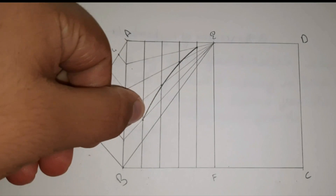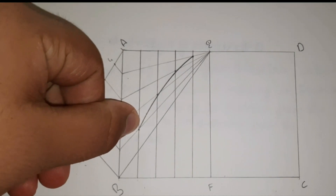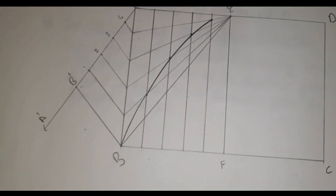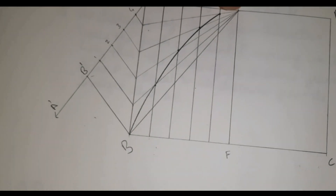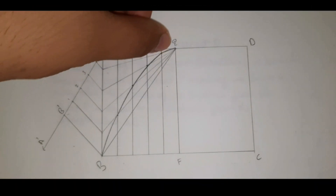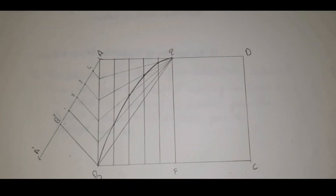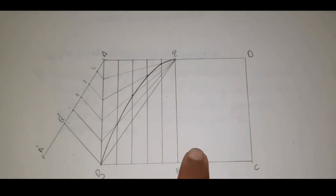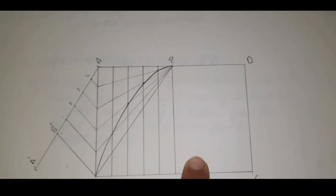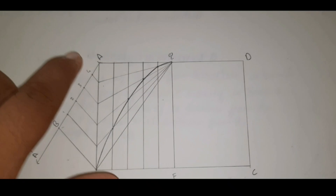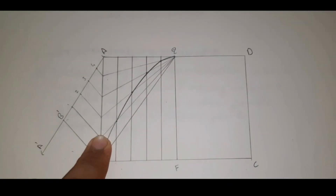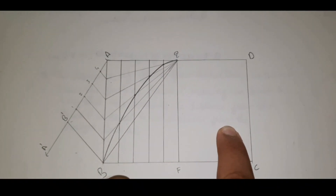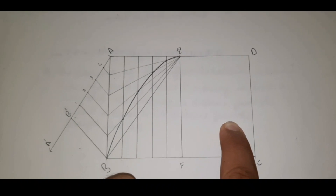Using a French curve, first join these 4 points, then these 2 points, and at last join these 2 points. After joining, our half parabola is completed. To complete the remaining parabola, we can repeat the steps or use an easier method.